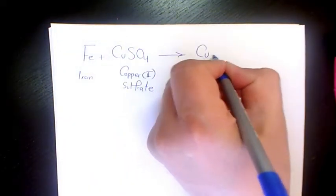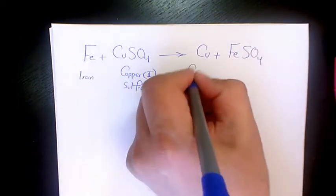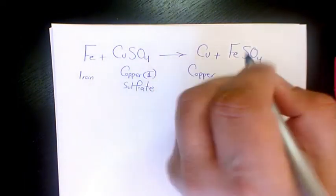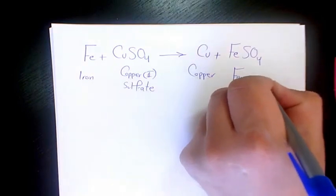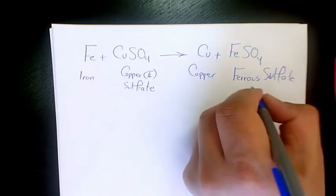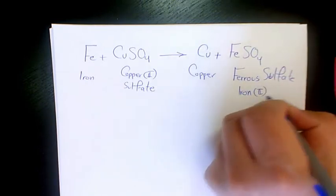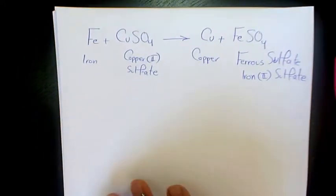Cu plus FeSO4, which is copper plus ferrous sulfate, or we can say iron 2 sulfate.